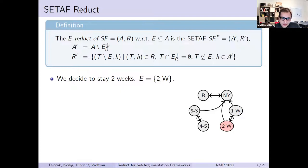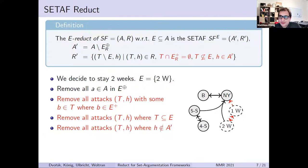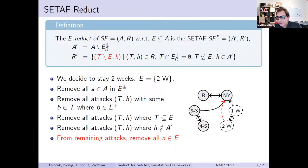For a second example, let's revisit the travel example from the very beginning. Say we decide to already stay two weeks. We remove the arguments in the range, then remove all attacks that cannot play a role. The collective attack from two weeks and five-star together towards New York cannot be fully in the remaining framework, because we already excluded the two-week argument. But the attack still plays a role, so we keep the part that remains: the attack from five-star to New York. This is how the remaining framework looks, and now we reason on it.